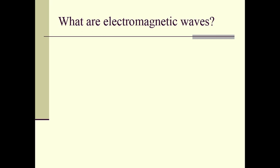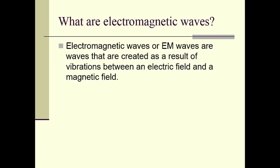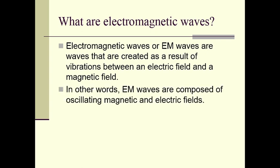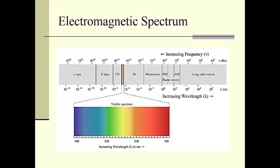Let us study what electromagnetic waves are. Electromagnetic waves are waves that are created as a result of vibrations between an electric field and a magnetic field. In other words, the waves are composed of oscillating magnetic and electric fields. This is the typical electromagnetic spectrum that we all know.